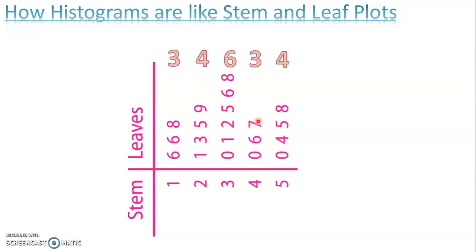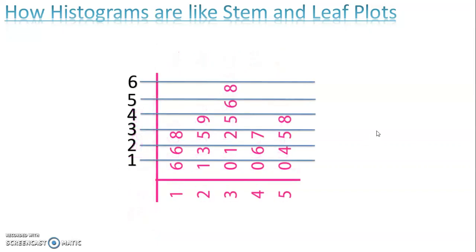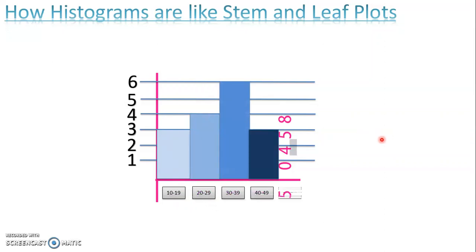So if I tip over a stem and leaf plot, it's kind of like a histogram. So remember, we're using these as intervals. So if I put my histogram over the stem and leaf plot, instead of saying my stem is one, let's say, oh, numbers between 10 and 19. We had three. Instead of saying my stem of two, what about numbers between 20 and 29? We have four, so on and so on. So I'm just showing you how we can connect a stem and leaf plot to a histogram. It's kind of like the same thing. We do see a lot of similarities.